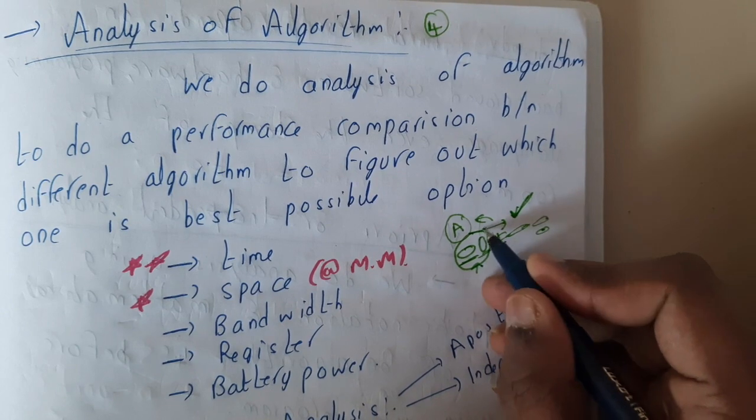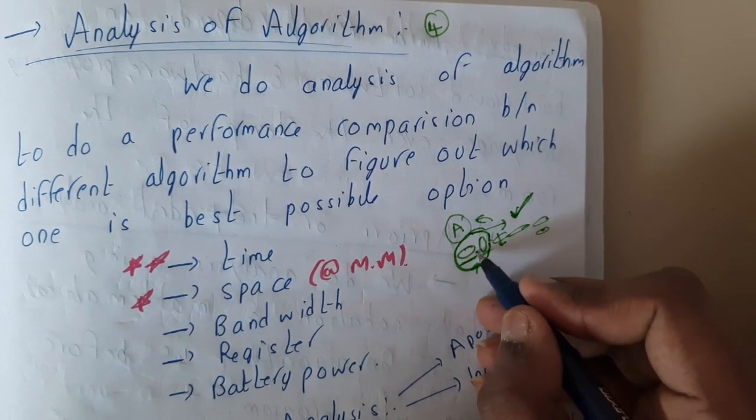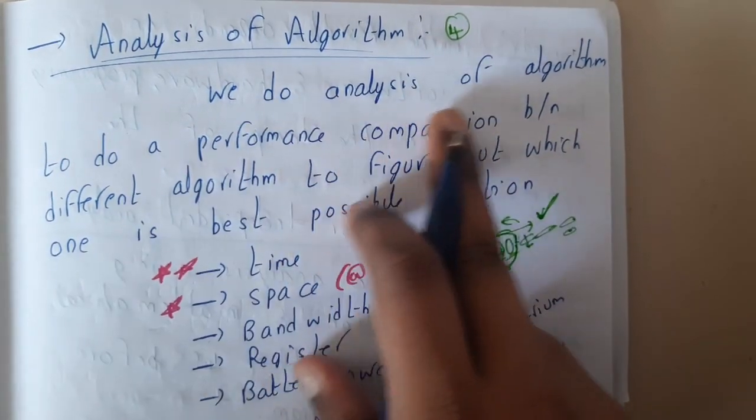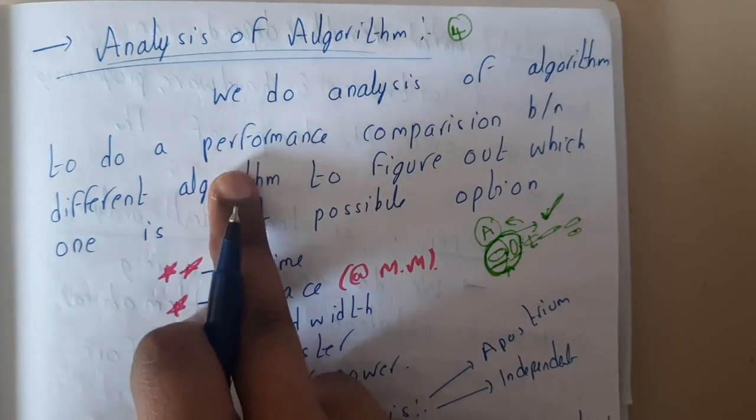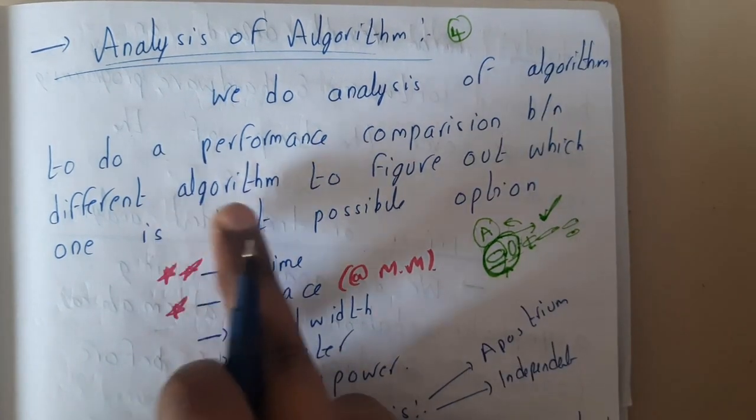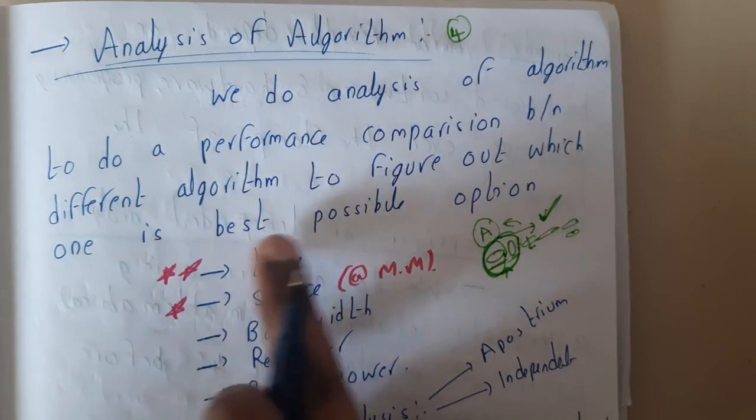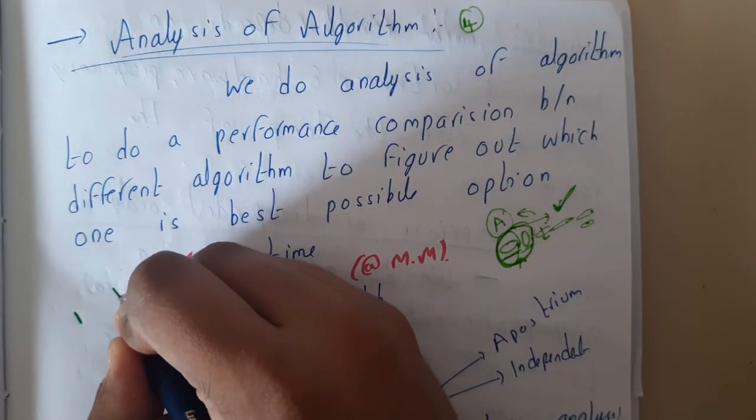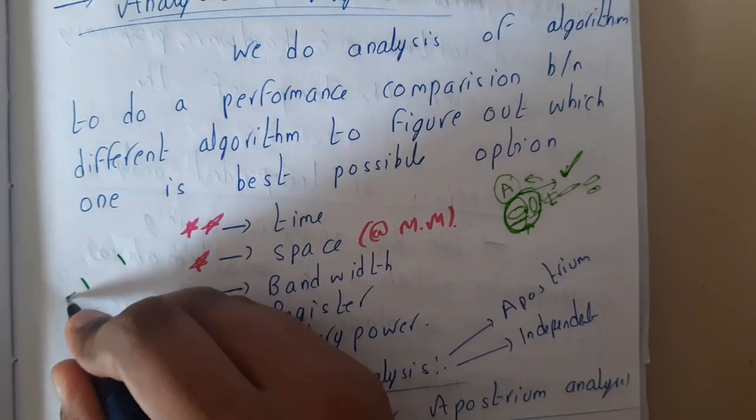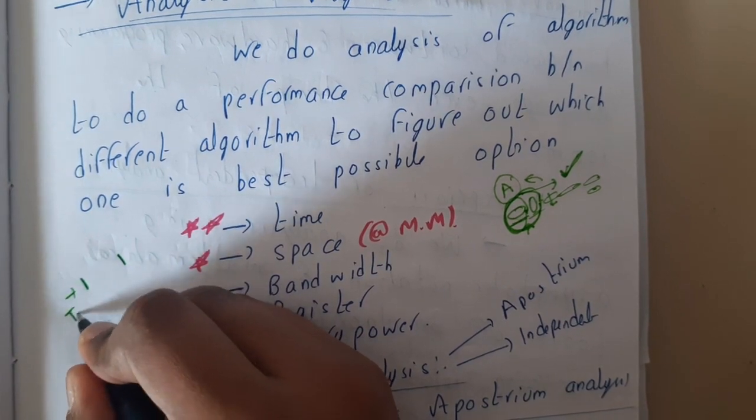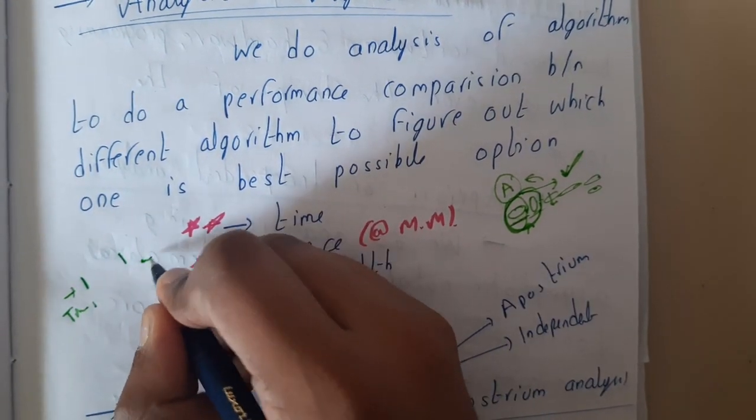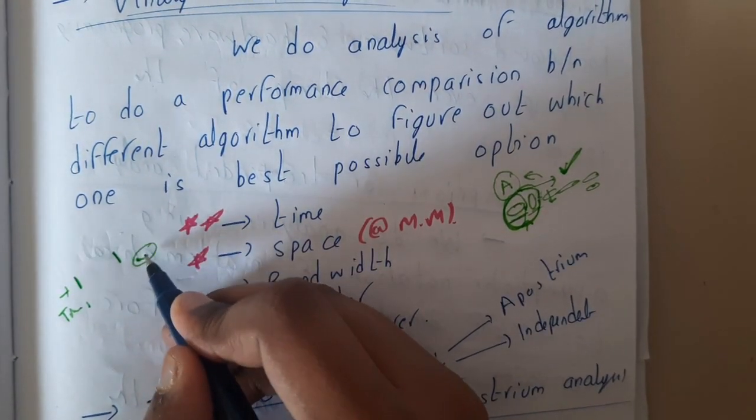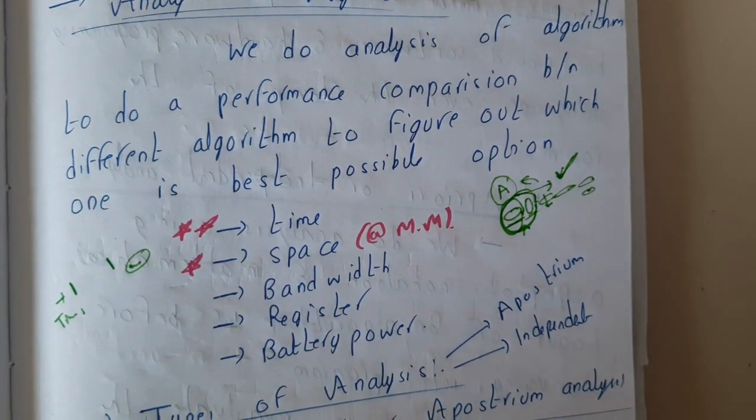When you are analyzing something, we'll be considering all these, and among these the main entities are the time and space. If you consider among these two which is important, you can assume that it is time. We do analysis of algorithm to do a performance comparison between different algorithms to figure out which one of them is the best. Assume that I wrote an algorithm and you wrote one algorithm - mine is working faster with respect to time, but yours is taking more time but the space consumption of yours is low.